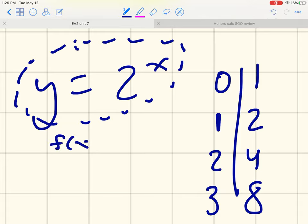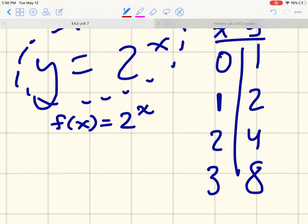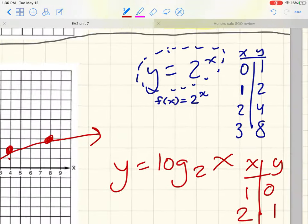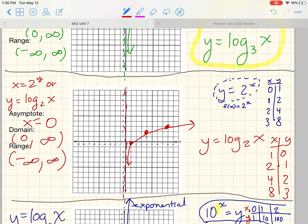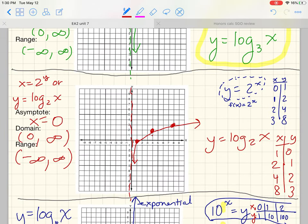And if we wrote it as f of x equals 2 to the x, one of the things we did start to talk about is what the inverse would look like. Remember, you can take these x and y ordered pairs and switch them. By switching the x and the y ordered pairs, we created a log graph.